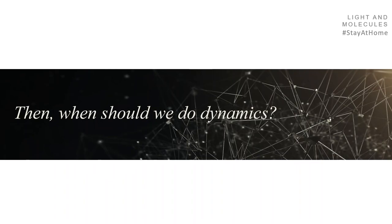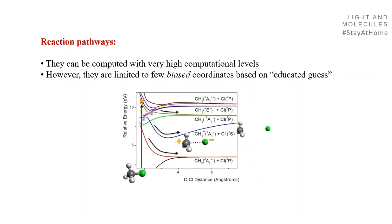So when should we do dynamics? Reaction pathways can be computed with very high computational level, the best that you can do. However, they're limited to few biased coordinates based on our educated guess, based on our chemical intuition. You should be absolutely sure that the pathways are important. But how can you know?